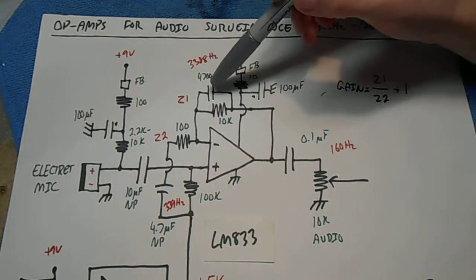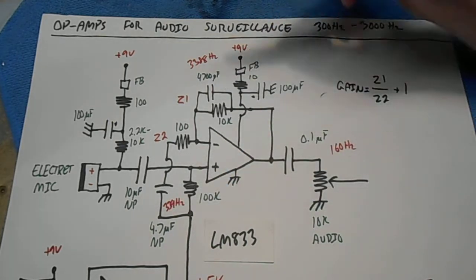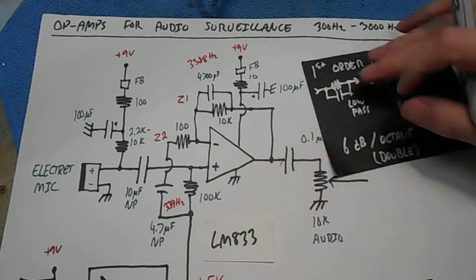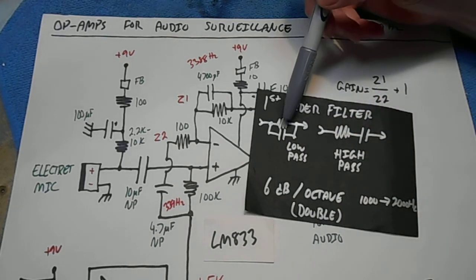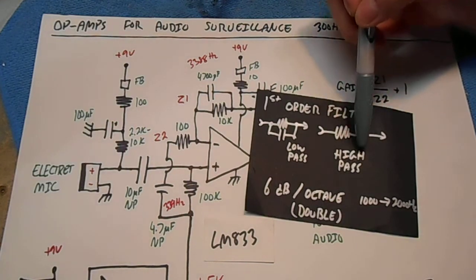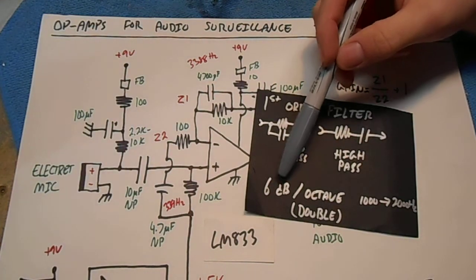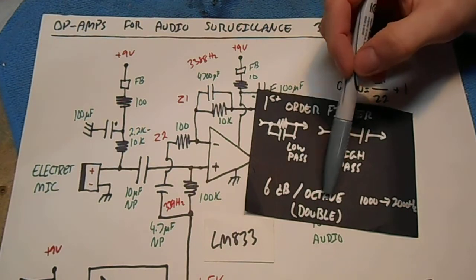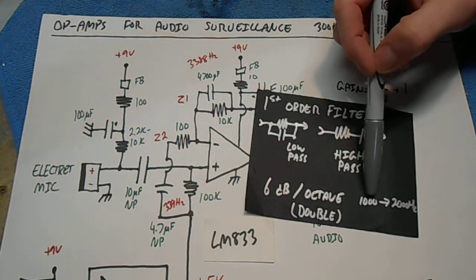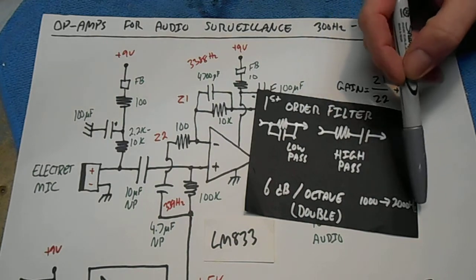But first we're going to look at how these capacitors form what's called a first order filter. When in parallel, like this, it forms a low-pass filter. When in series, it makes a high-pass filter. There's approximately 6 dB per octave roll-off. An octave is a doubling in the frequency from like 1,000 Hz to 2,000 Hz. That's considered an octave.